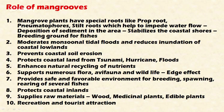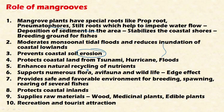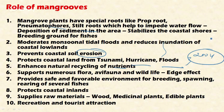Mangroves moderate tidal floods by acting as a shelter belt, restricting the flow of high-speed water and reducing the inundation of coastal lowlands. These stilt roots, prop roots, and mangroves act as shelter belts, thereby reducing submergence of coastal lowlands. This also prevents coastal soil erosion, as pneumatophores and stilt roots restrict the flow of soil. Most importantly, mangroves protect the coastal land from tsunamis, hurricanes, and floods. The 2004 tsunami is evidence that wherever mangroves were present, the damage was very less.